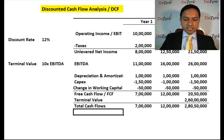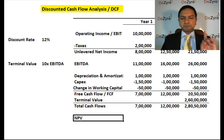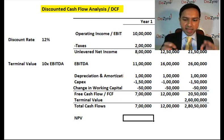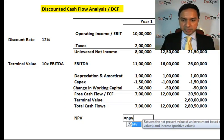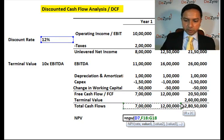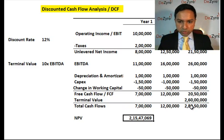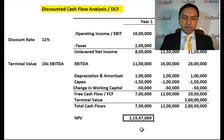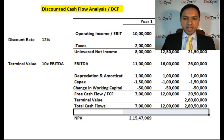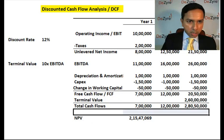The next step is calculating the NPV. In the last session I showed how to do it manually, but in Excel you simply type =NPV, open the bracket, click on the discount rate (12%), add a comma, select your cash flows, and close the bracket. The result is approximately 2 crores, 15 lakhs, 47,069 — that is the net present value of all your future cash flows.